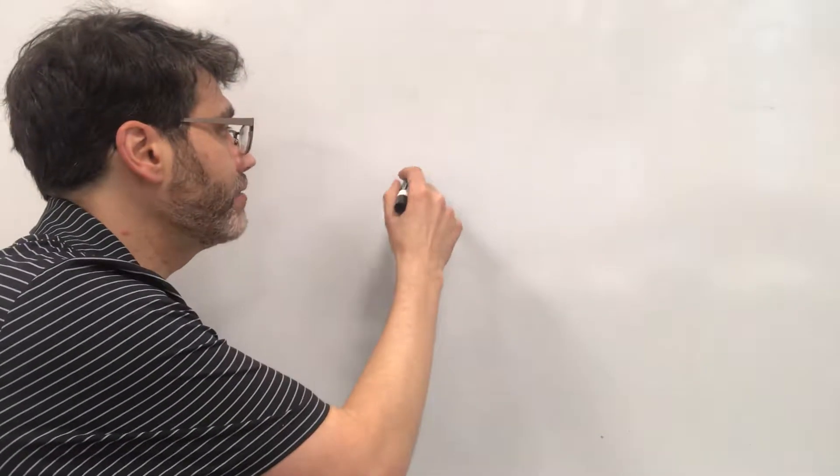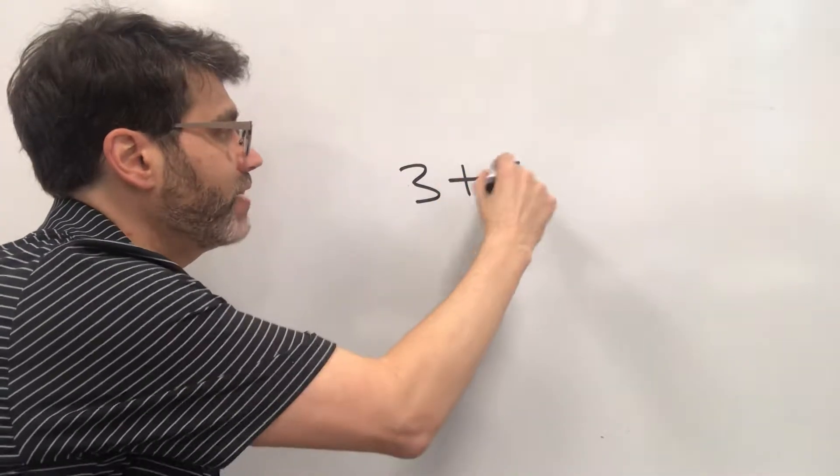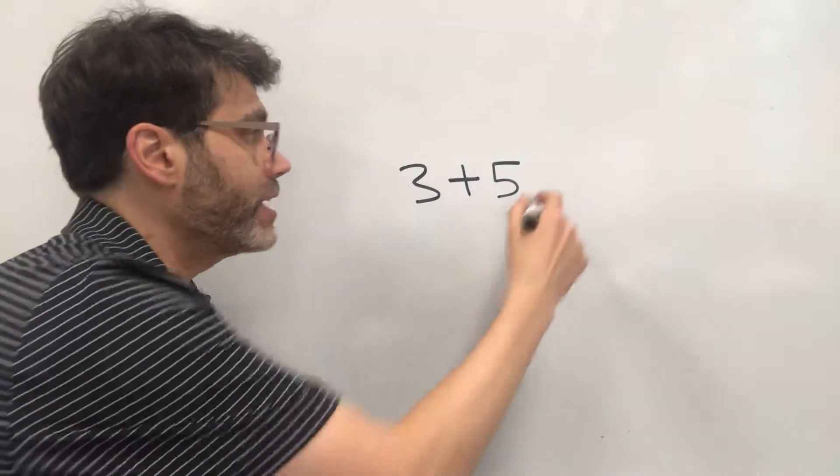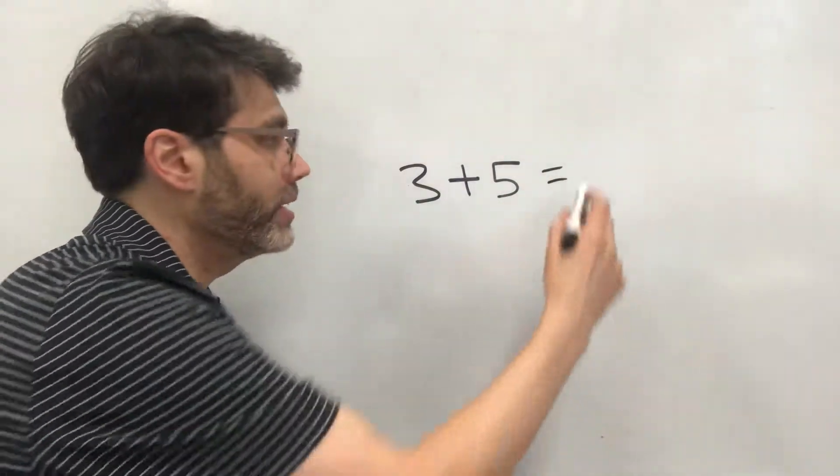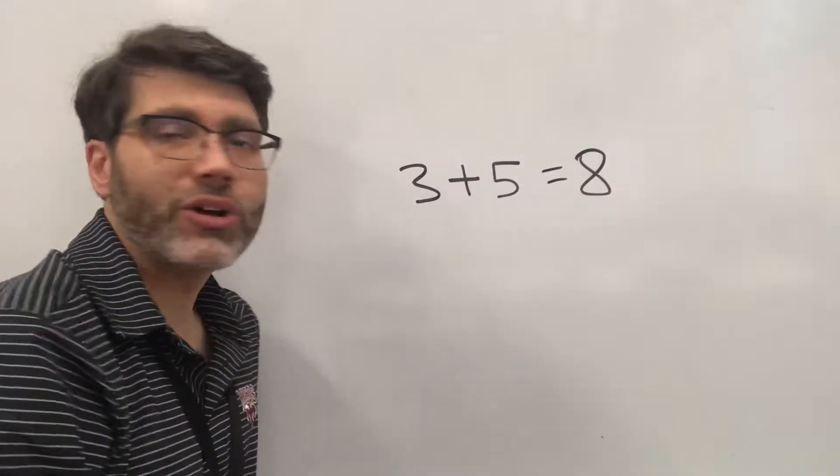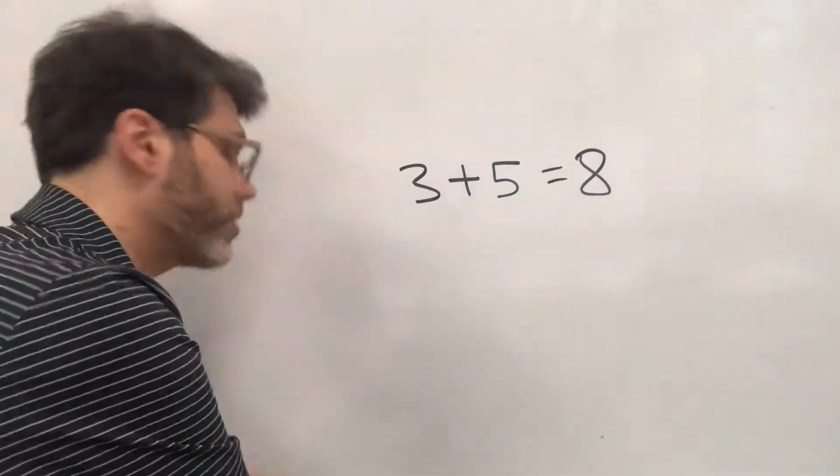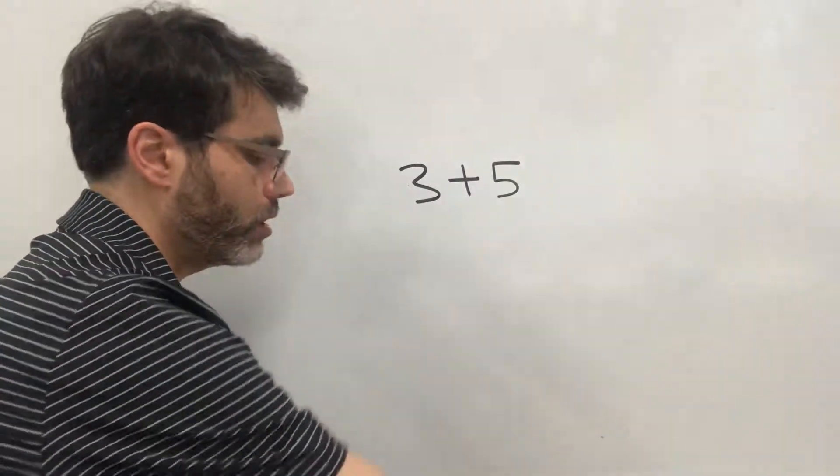Hi, so we're going to start chapter 3 which is simplifying expressions. So an expression is a statement that does not have an equal sign in it. So if we have 3 plus 5 that's an expression and if we add an equal sign to it then it's called an equation. So equations have equal signs but with no equal signs we call these expressions.